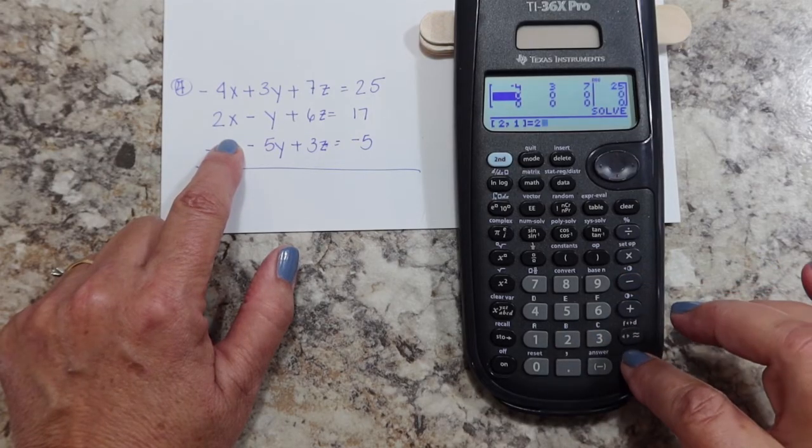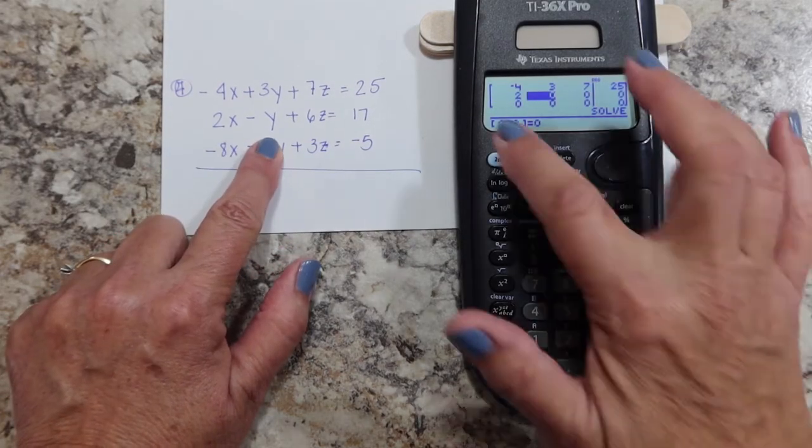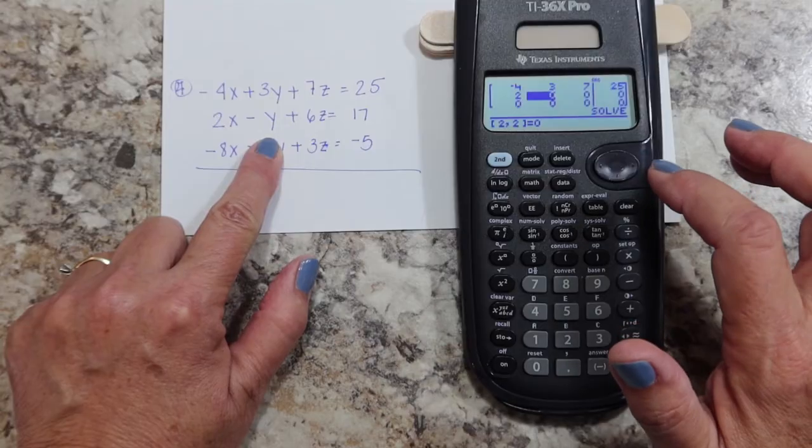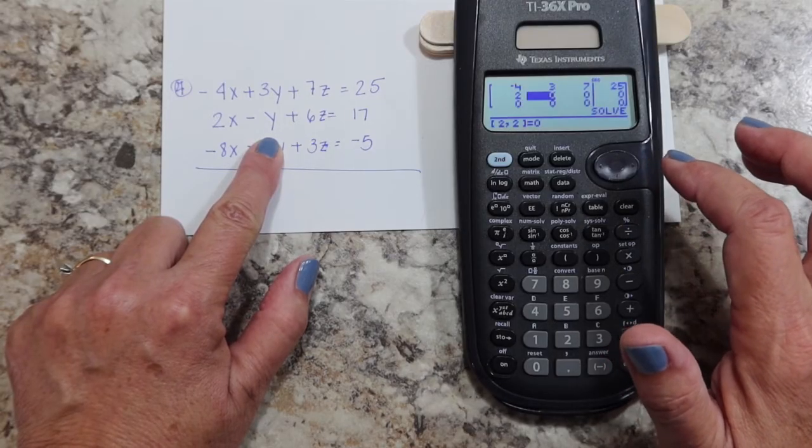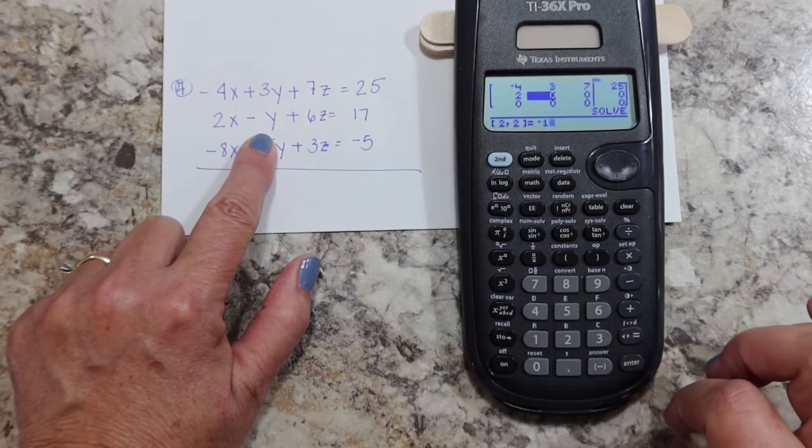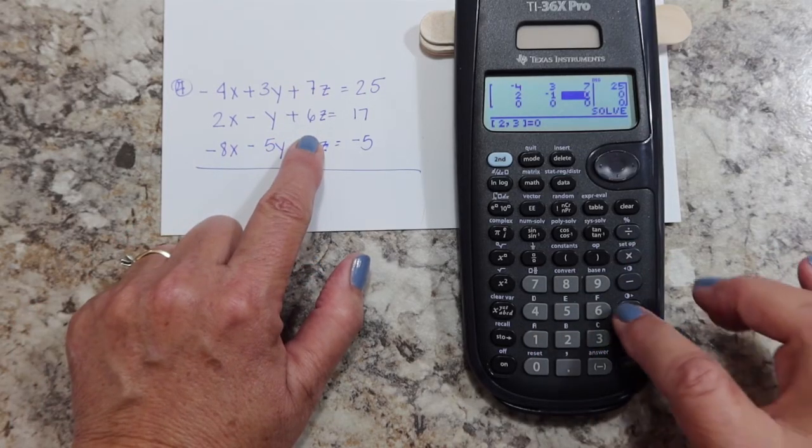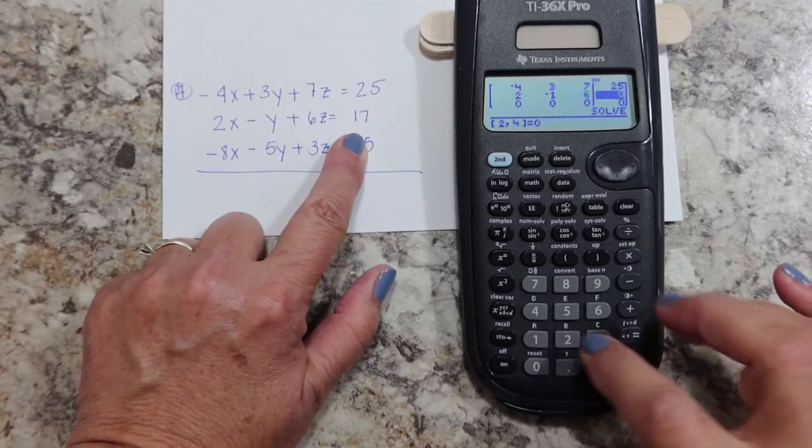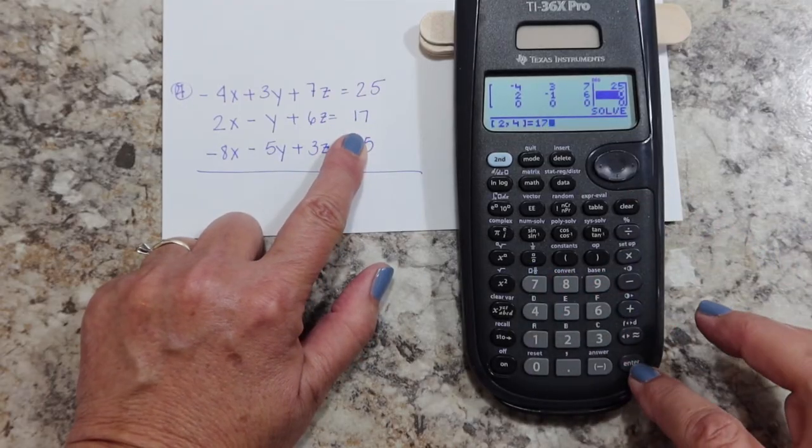And I'm just going to continue on down for the other two equations. My next one is two. Now I don't have plus and minus signs, so you have to give that sign to your coefficient. Since this is a minus Y, I'm going to enter negative one. My last number is six, and then I have 17 for the constant.